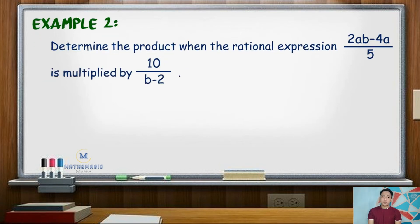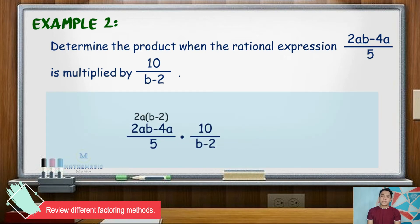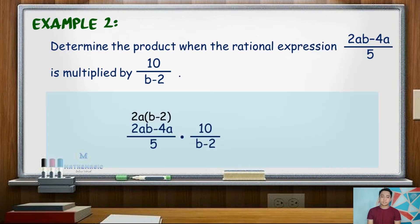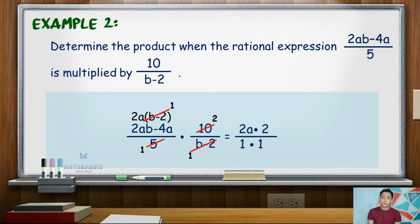For our second example: 2ab minus 4a all over 5, times 10 over b minus 2. Observe that the numerator of the first rational expression has a common factor of 2a, which can be written as 2a times quantity b minus 2. Using the cancellation method, quantity b minus 2 cancels out. 10 and 5 have a common factor of 5, so 10 becomes 2 and 5 becomes 1. Thus, for the numerator we have 2a times 2, or 4a, and the denominator is 1. Hence, the product is 4a.